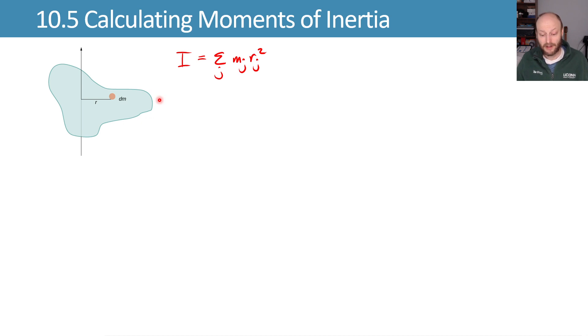In this case, we can do the same thing, but now we split up our mass into infinitesimally small little bits, dm, and then add up an infinite number of those to get our moment of inertia for a continuous mass distribution.